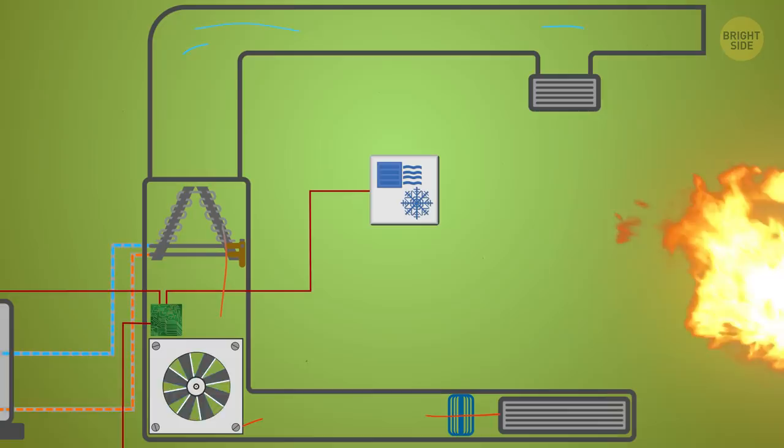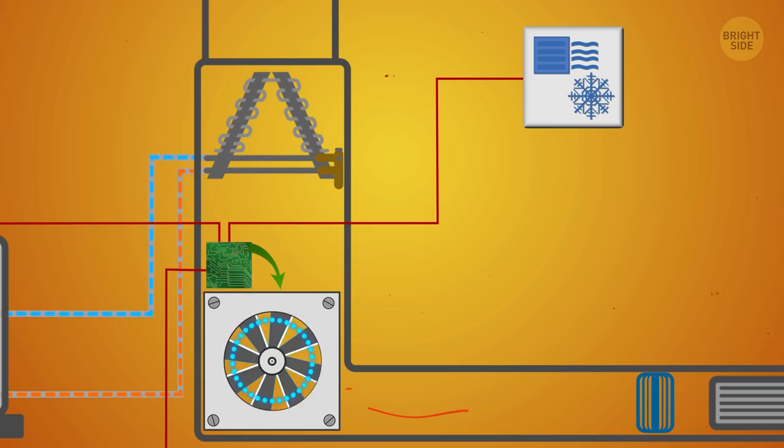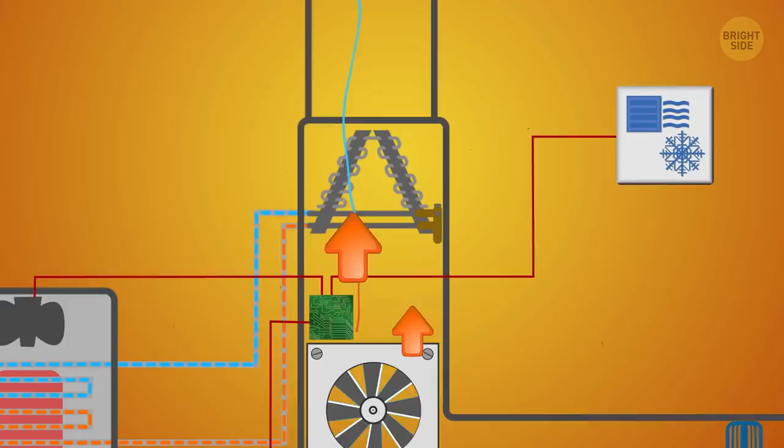When it gets too hot in the room, the thermostat sends an SOS signal to the circuit board. It turns on the blower motor. The hot air from the room is sucked in through the return vents. Then the air meets the refrigerant.